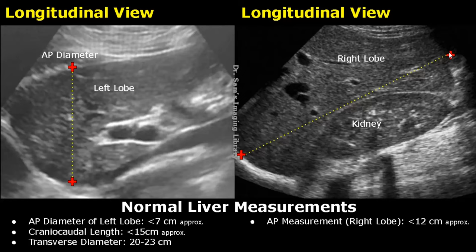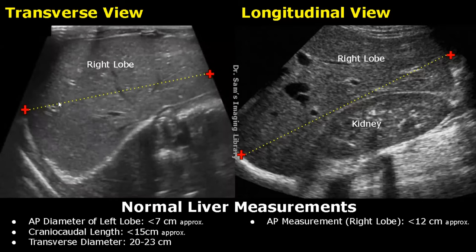This is a transverse view of the liver. The transverse diameter can be measured by placing the calipers as shown in the image. The transverse diameter is usually between 20 to 23 cm.